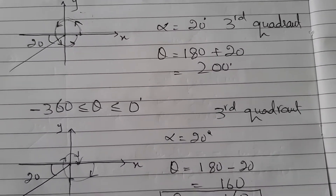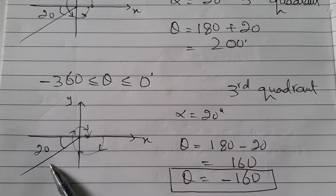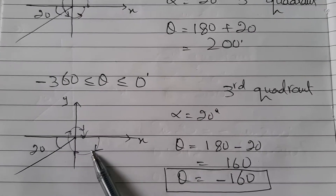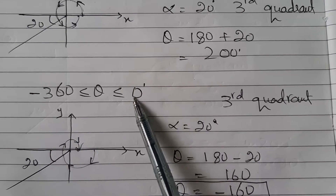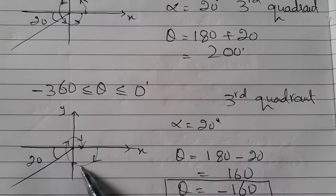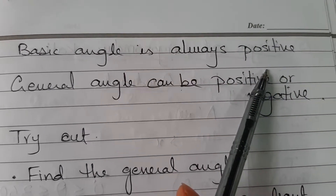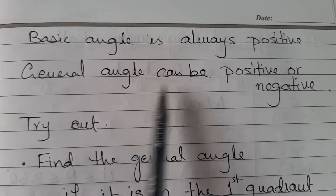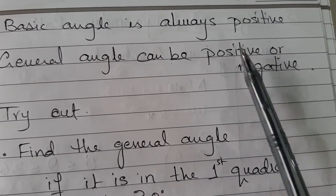Again in the third quadrant, if my basic angle is 20 degrees and the range is minus 360 to 0, that means I go all the way clockwise from here, and my general angle is minus 160. Basic angle is always positive because you are making it with the x-axis in that quadrant. General angle can be positive or negative — it depends on whether you are measuring clockwise or anti-clockwise. If it is clockwise it is negative; if it is anti-clockwise it is positive.